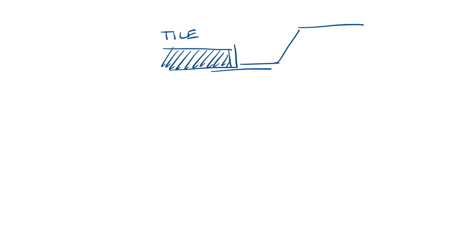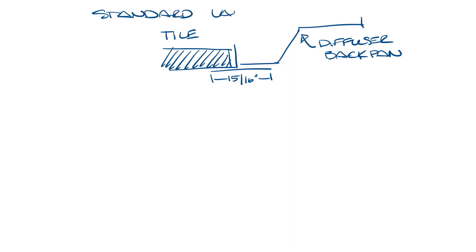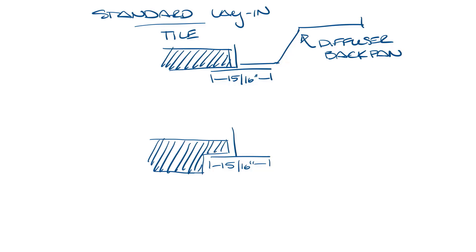Let's start with the standard lay-in ceiling. Looking at the profile of the grid, it just looks like this. The ceiling tile would lay on this section and then the edge of the diffuser backpan would lay on this section. This is a standard lay-in ceiling — it has a 15/16 inch wide tee. The ceiling tile and diffuser lay flush with the grid. You can also have a drop face diffuser. In that case, it's designed for the tile and the diffuser to lay below the ceiling grid, so it looks like this where the tile drops down a little. You have to pick a diffuser that will also drop down by the same amount for this to look right.